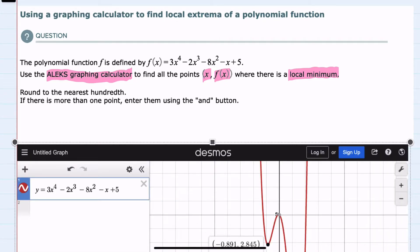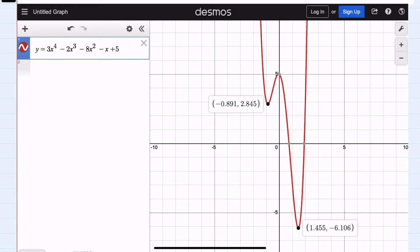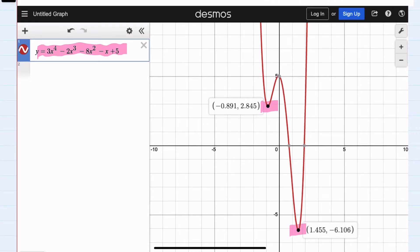However, instead of using the ALEKS graphing calculator, I used the free Desmos online calculator, being sure to enter the function f(x) exactly as it was given. I can see that I have two local minimums, and the instructions ask me to round these coordinates to the hundredths place.